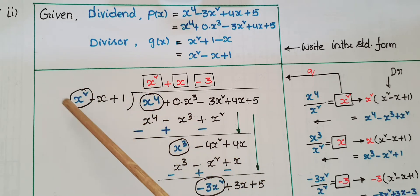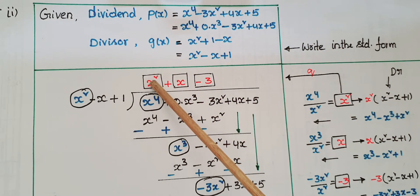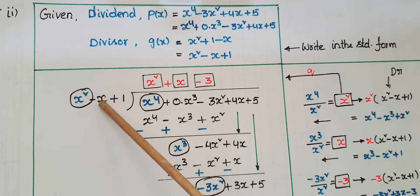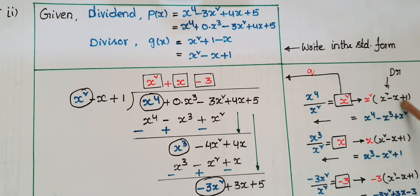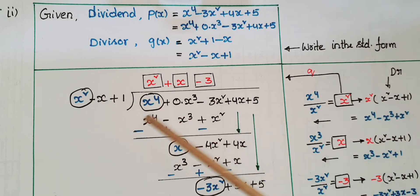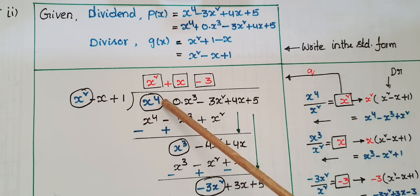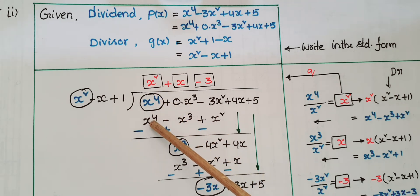Write the dividend and divisor in position. Take x⁴ divided by x² = x². Write x² at the quotient place, then multiply x² with (x² - x + 1): x⁴, -x³·x² = -6x³... changing signs: minus, plus, minus. x⁴ - x⁴ = 0.